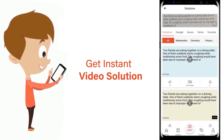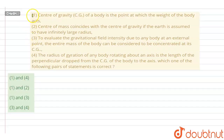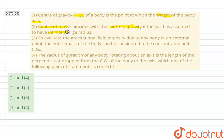In this question, we have four different statements and we have to determine which two of these statements are correct. The first statement is: center of gravity of a body is the point at which weight of the body acts. Second: center of mass coincides with the center of gravity if earth is assumed to have infinitely large radius. Third: to evaluate gravitational field intensity due to any body at an external point, the mass of the body can be considered to be concentrated at its center of gravity. Fourth: the radius of gyration of a body rotating about an axis is the length of the perpendicular dropped from center of gravity of the body to the axis.